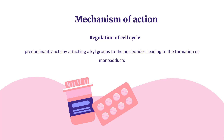Mechanism of Action. Carboplatin predominantly acts by attaching alkyl groups to the nucleotides, leading to the formation of monoadducts and DNA fragmenting when repair enzymes attempt to correct the error. 2% of carboplatin's activity comes from DNA crosslinking from a base on one strand to a base on another, preventing DNA strands from separating for synthesis or transcription. Finally, carboplatin can induce a number of different mutations.